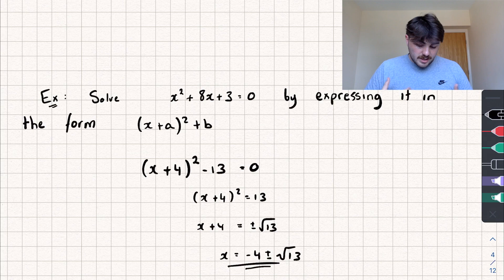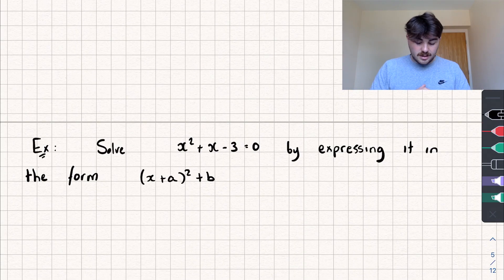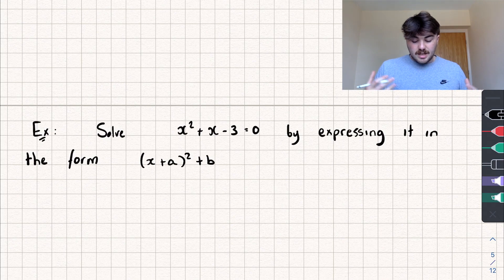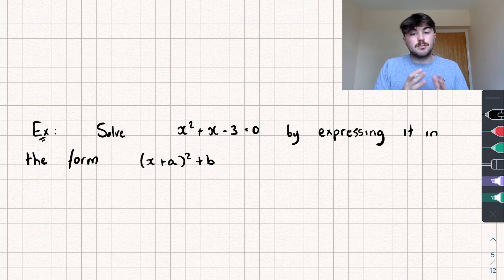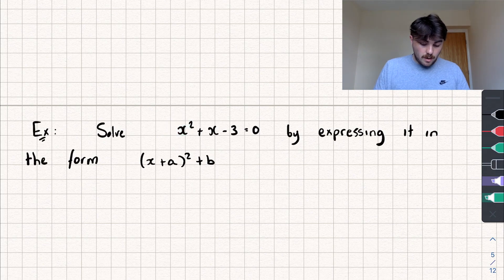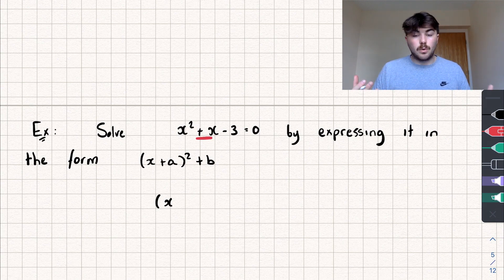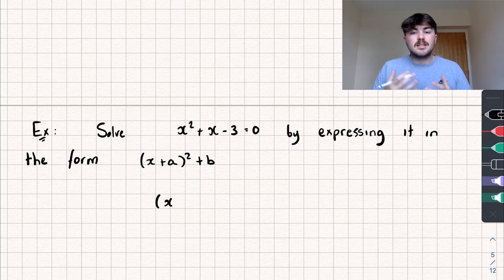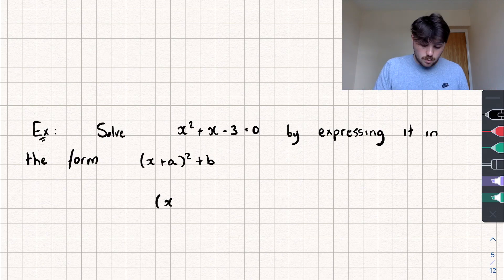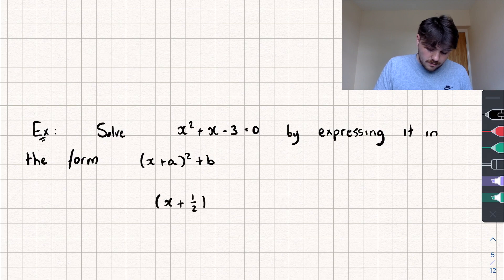Let's look at a bit of a trickier example now. We have to solve x squared plus x minus 3 equals 0 by expressing it in the completed square form x plus a, all squared plus b. First, look at the coefficient of x squared — it's equal to positive 1, so we continue as before. Write a bracket with x inside. The coefficient of x in the original quadratic is positive 1, so we half it to get 0.5. In A-level we tend to use fractions, so we write plus one half, all squared.